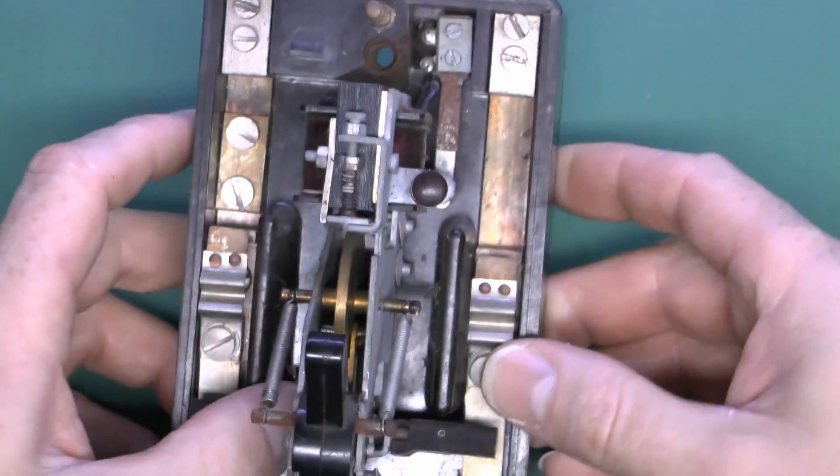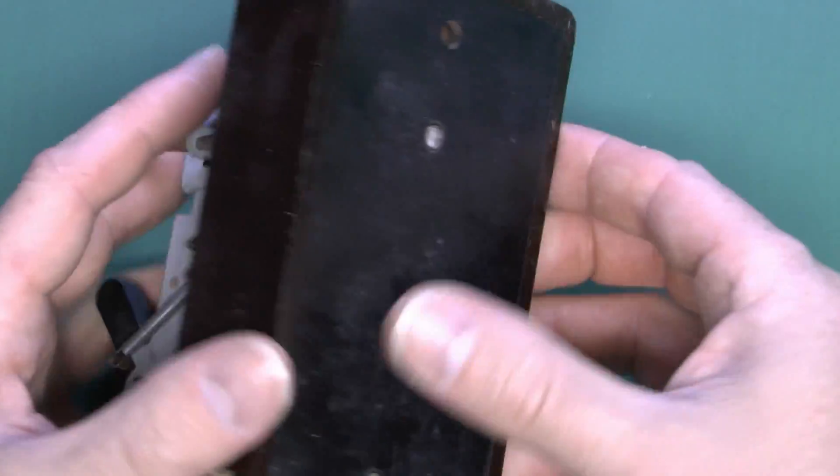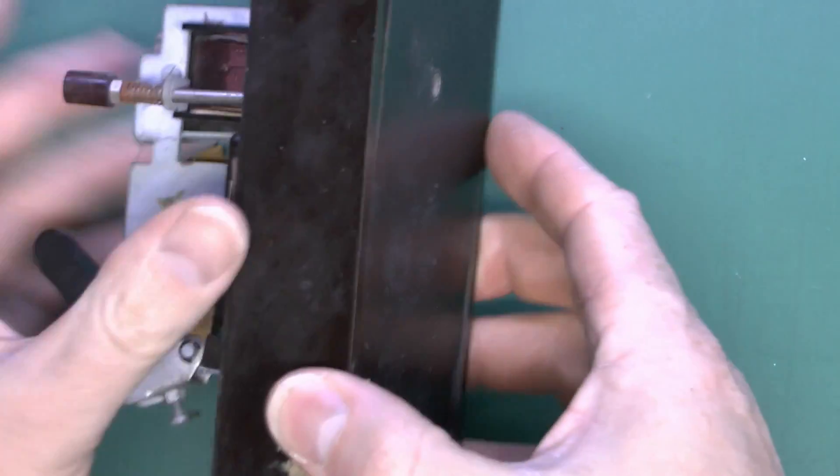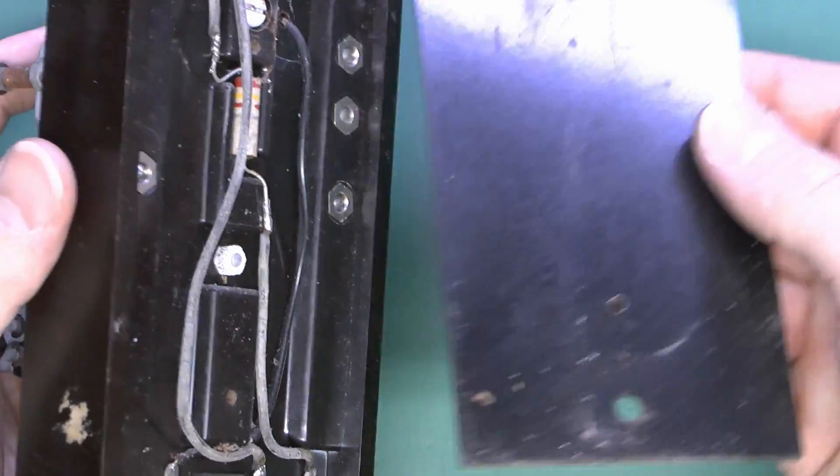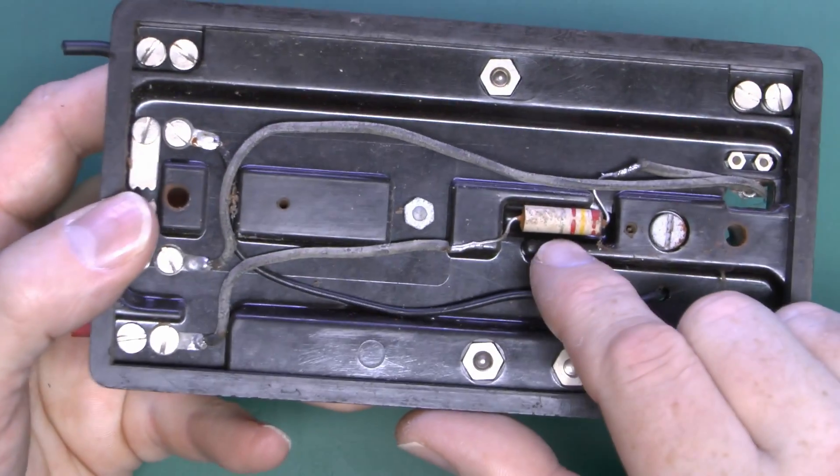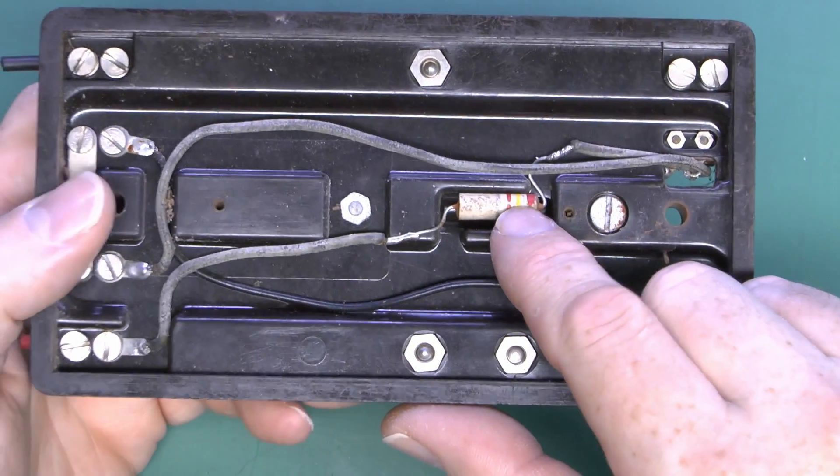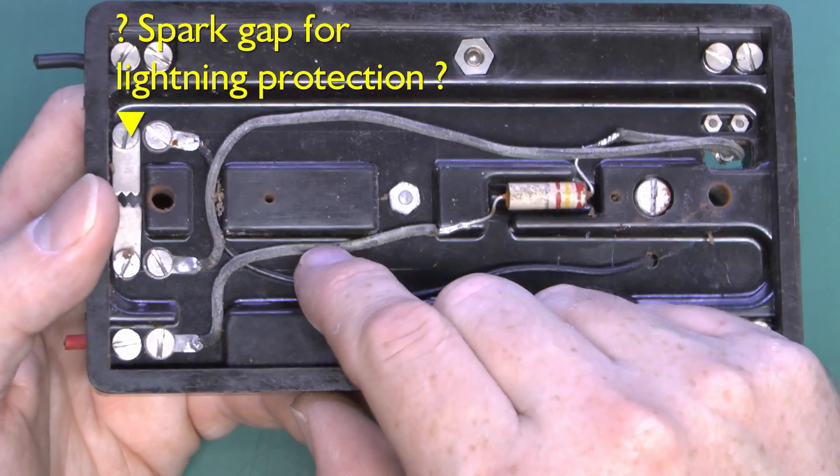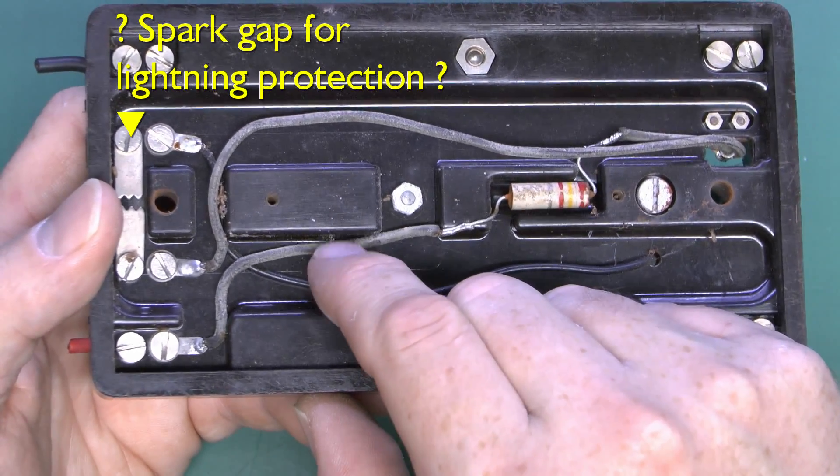Nothing much else to say on this side, so let's have a look inside on the back. Inside then we've just got this plate which removes from the back, and then we've got the resistor here which will be for the test button just to limit the current through that coil. We've got our connections down the bottom here. These appear to be rubber insulated wires.